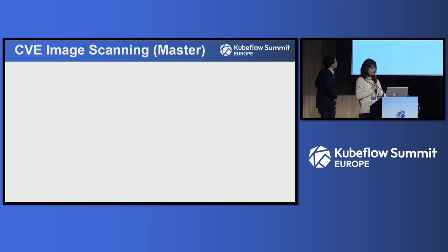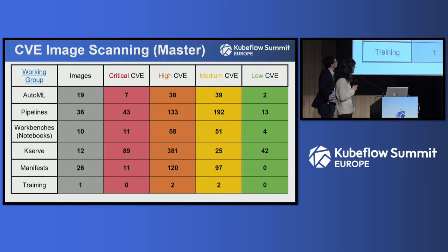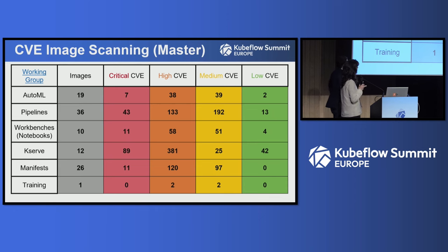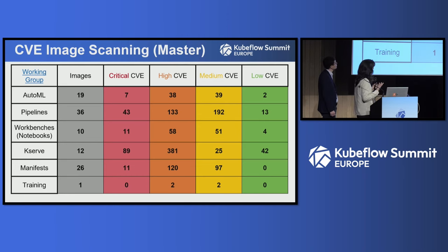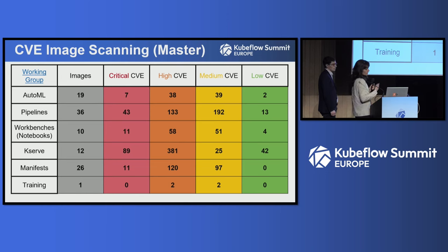Talking about CVE image scanning — this table shows the results from our last CVE scan. It contains information about the number of images per working group with their CVEs divided by severity. We've already had a great improvement in lowering these numbers, but there is still more to do. Most of these CVEs actually come from our external dependencies or from the underlying operating system, and can be addressed by upgrading to a newer version or rebasing the image.